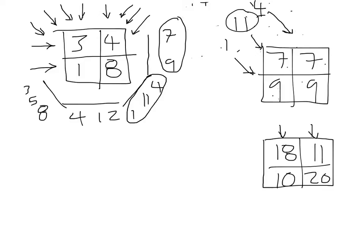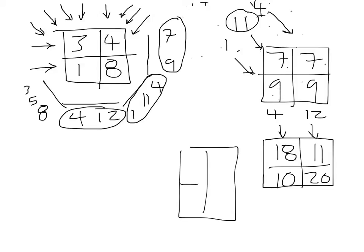Now I've got the values from the third direction — four and twelve — and I'm going to pass them through in the direction they were acquired. So twelve plus eleven gives twenty-three, twelve plus twenty gives thirty-two, four plus eighteen gives twenty-two, and four plus ten gives fourteen.